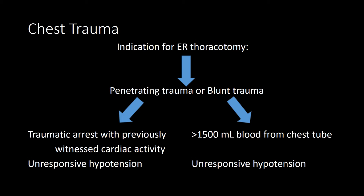Indications for ER thoracotomy: for penetrating trauma, it's traumatic arrest with previously witnessed cardiac activity, or unresponsive hypotension. For blunt trauma, indications are greater than 1500 mL blood loss from a chest tube or unresponsive hypotension. Flail chest is when three or more adjacent ribs are fractured in two places — it's associated with morbidity from pulmonary contusion, and most patients will need positive pressure ventilation; severely distressed patients may need rapid intubation.